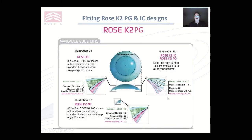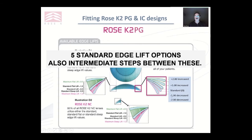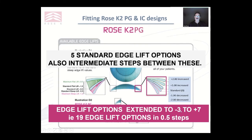When we're talking about the peripheral fit, we're talking about what happens from the edge of the optic zone out to the edge of the lens. When you change the edge lift from any of my designs, all those secondary curves will change, although when judging the fit we're only looking at the last approximately one millimetre. I originally defined five lifts, then extended that by adding intermediate lifts in 0.5 steps. Minus means we're tightening the lift, plus means we're increasing it. This has been extended from minus three decreased to plus seven increased, giving 19 edge lift options in 0.5 steps.